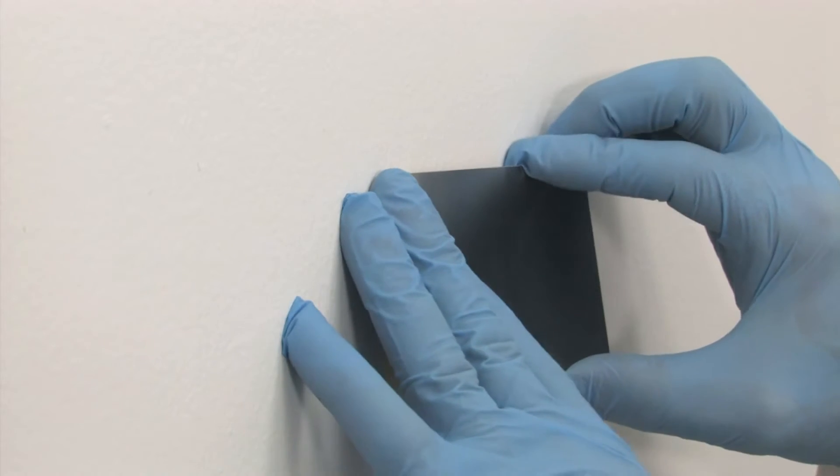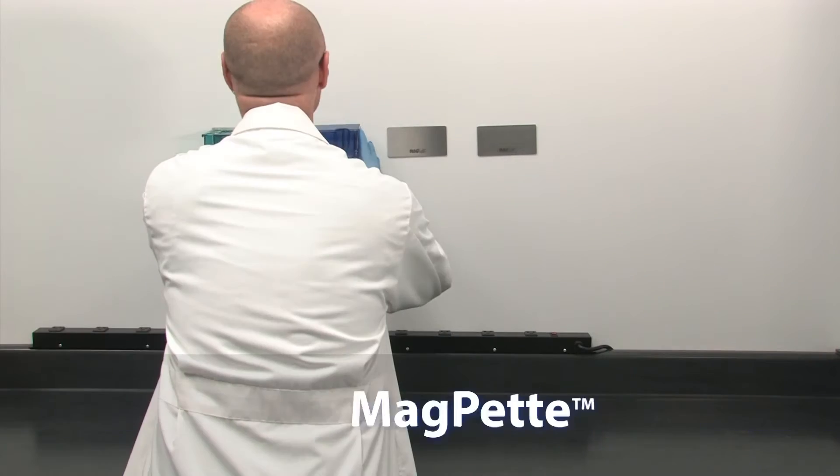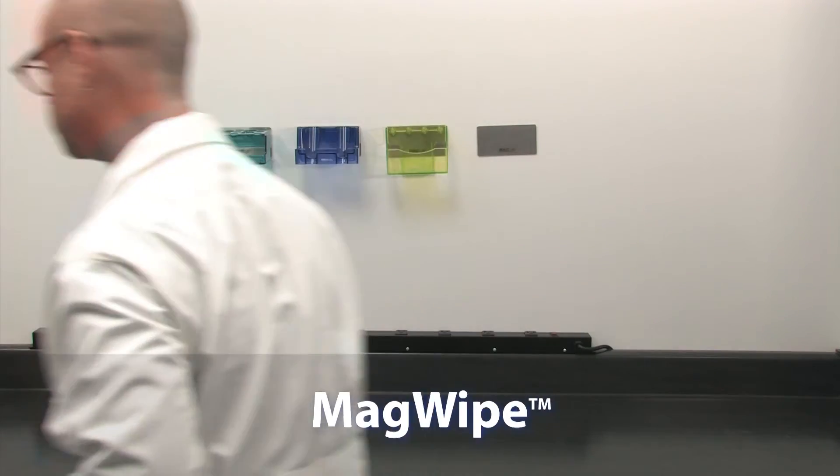The MagLab series includes four magnetic storage pieces: the MagRack, the MagPet, the MagWipe, and the MagBox.